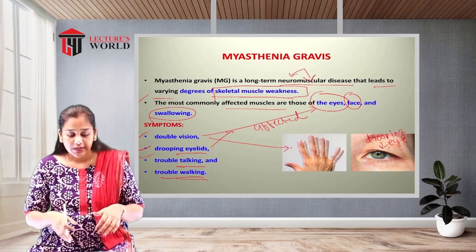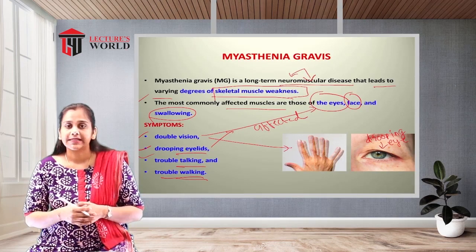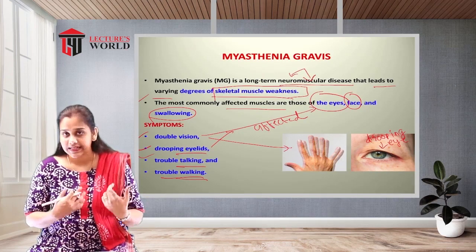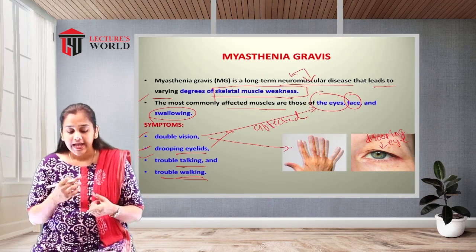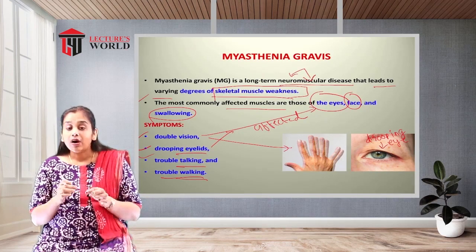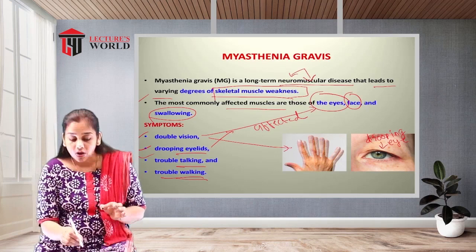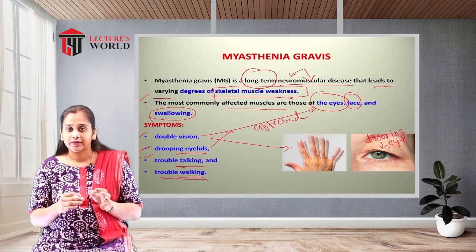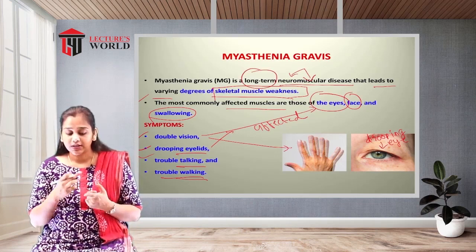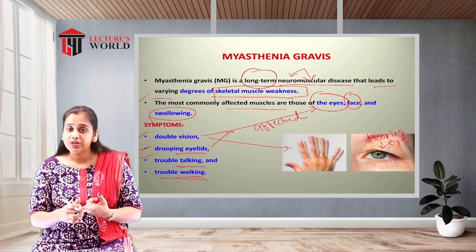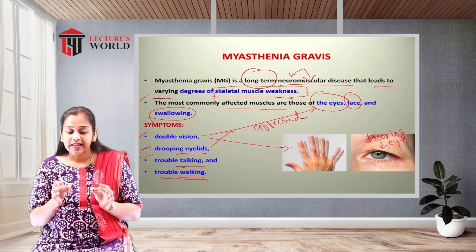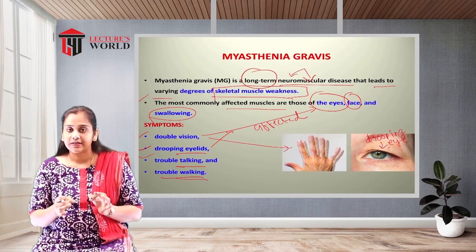In summary, myasthenia gravis is a long-term neuromuscular disease in which skeletal muscle weakness occurs at a variety of levels in the body.